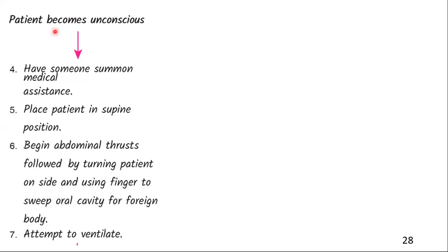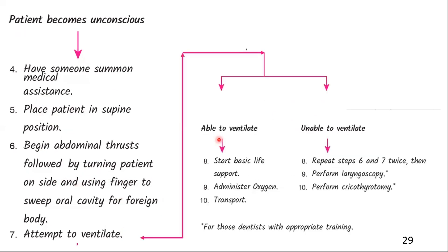If the patient becomes unconscious, immediately have someone call for medical assistance. Place the patient in a supine position to perform abdominal thrusts. After each thrust, turn the patient on their side and perform a finger sweep to remove any foreign body. Attempt to ventilate the patient. Start basic life support if the patient is able to ventilate. Administer oxygen to ensure adequate oxygenation. Transport the patient to an emergency care facility for further evaluation and treatment.